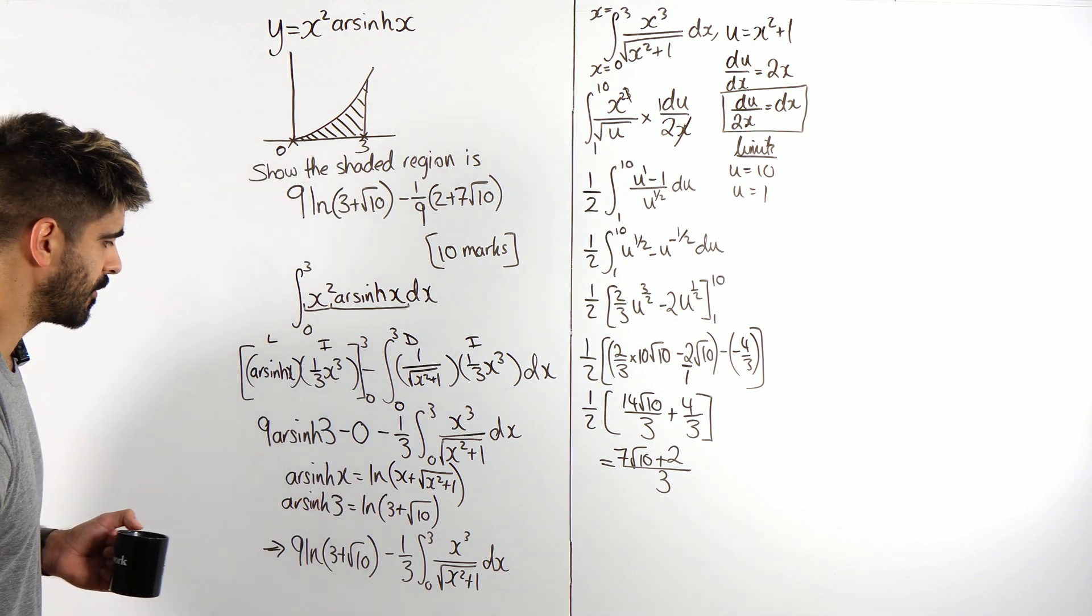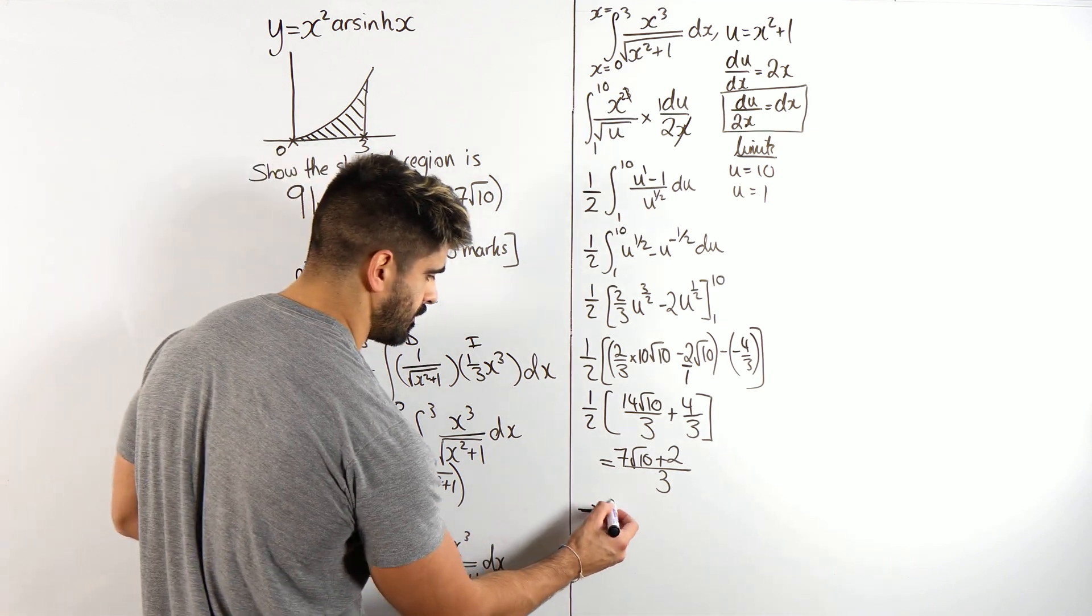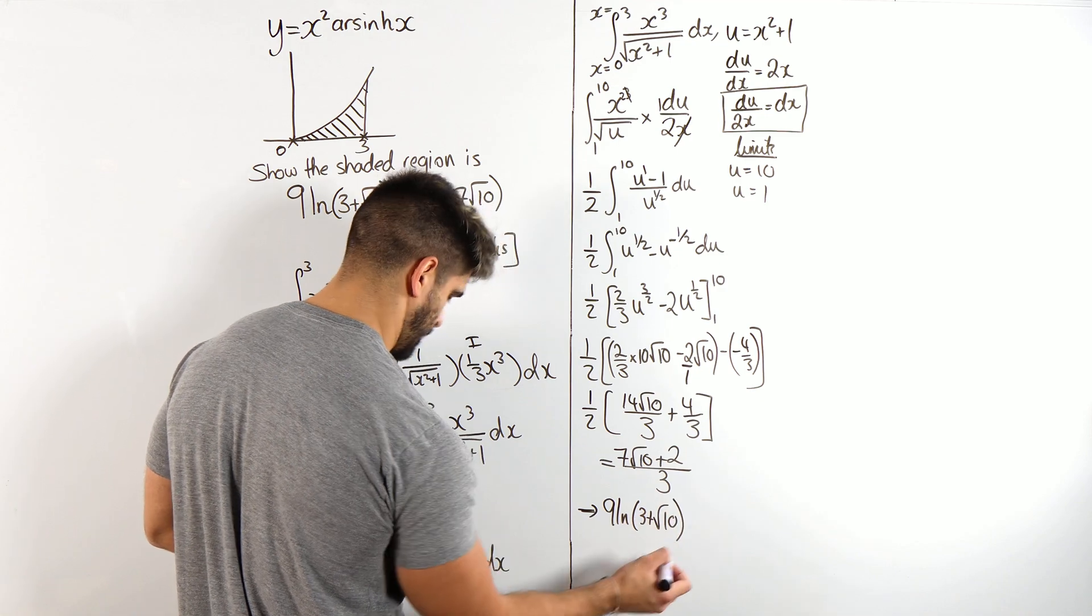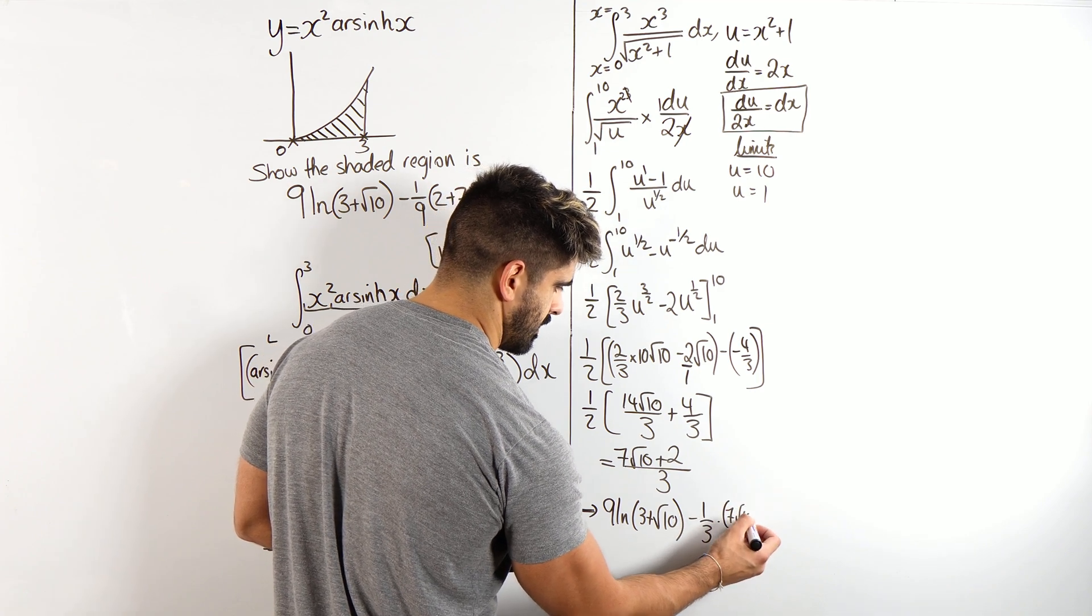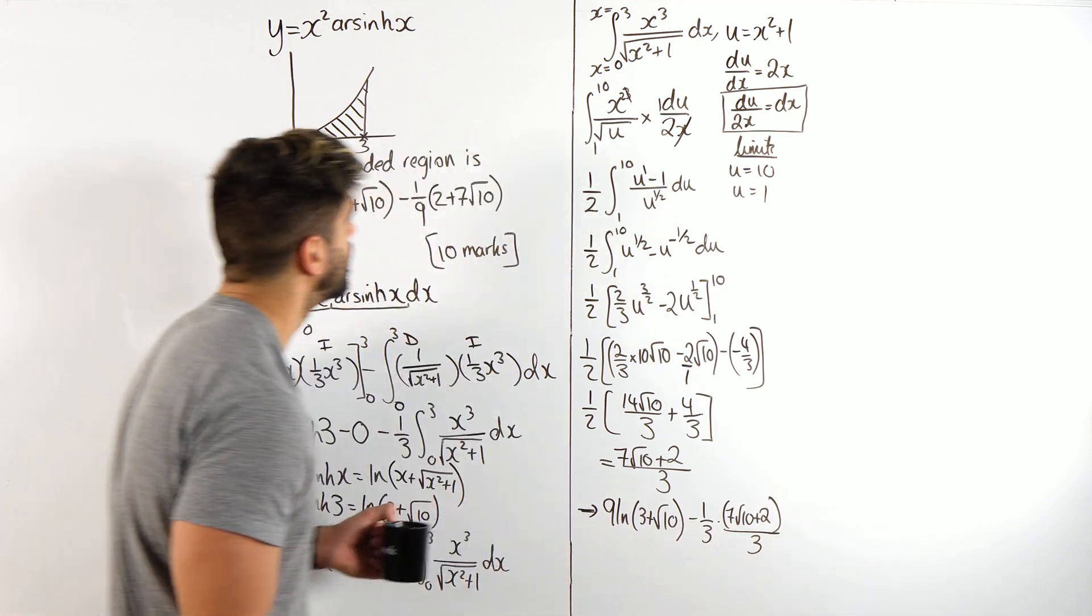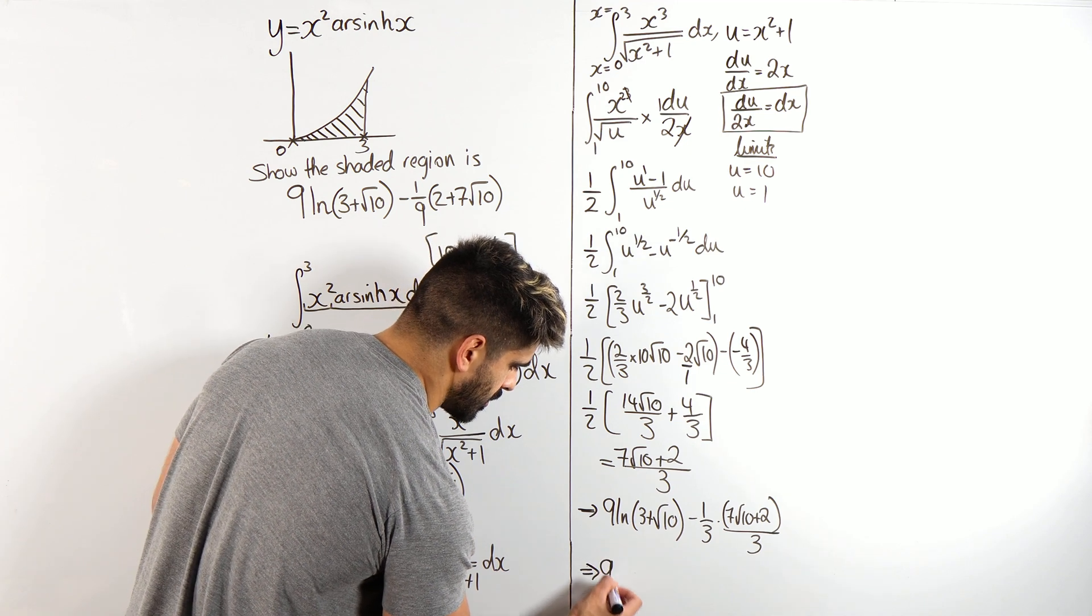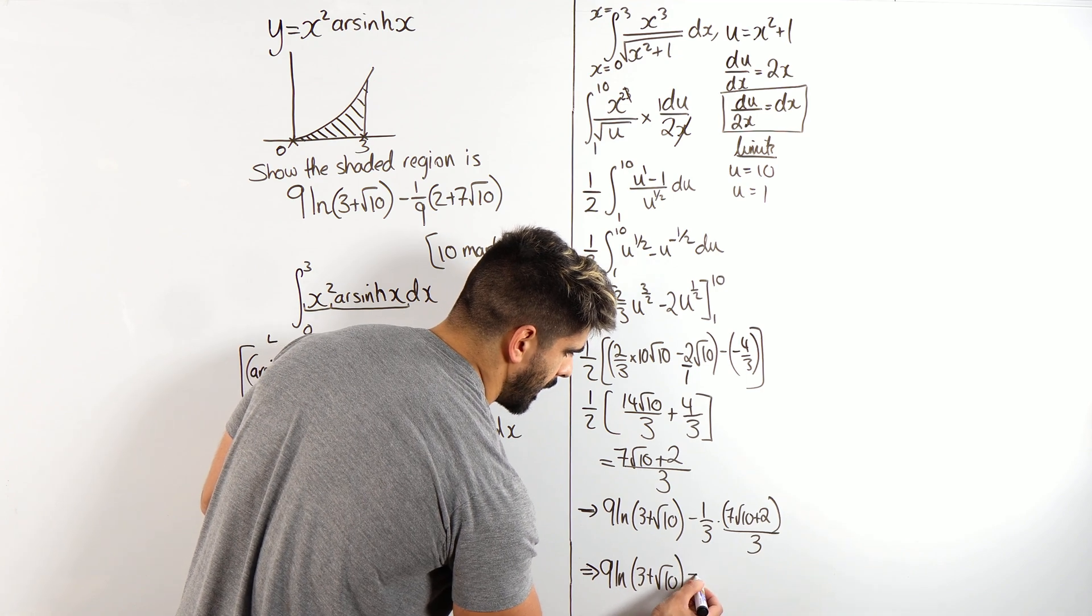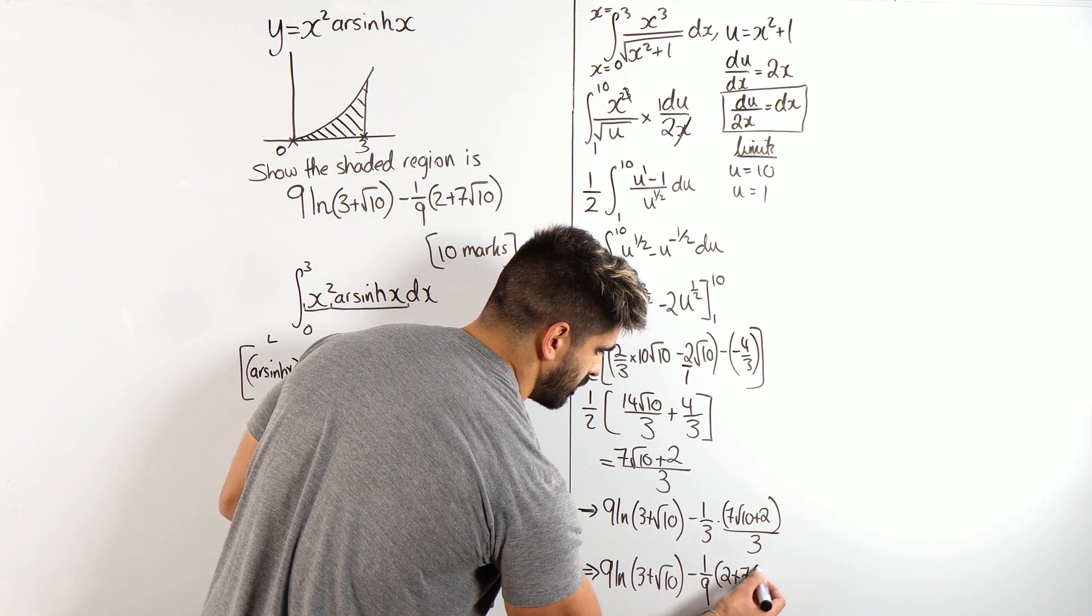Now we can go back to where we were before, so we get, so therefore, we have the 9 ln 3 plus root 10, minus a third, lots of 7 root 10 plus 2, all over 3, and they just wrote the 2 first. So, we get our final beautiful solution, 9 ln 3 plus root 10, minus a ninth they wrote it as, 2 plus 7 root 10, and that is our solution for 10 marks.